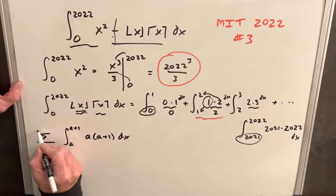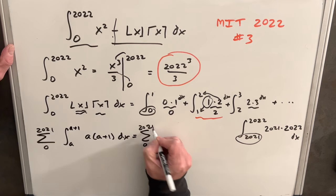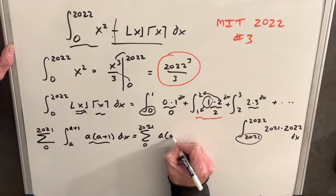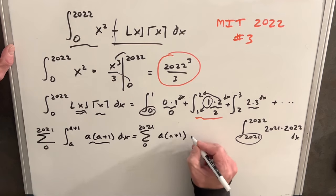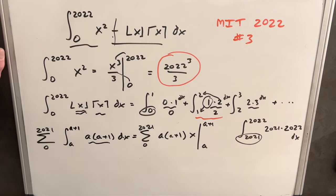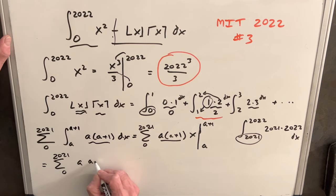What we're actually doing is summing this whole thing from 0, our starting point, to 2021. When we integrate this, we still have our sum. This is just a number. So when we integrate, this is going to be A times A plus 1 times x.